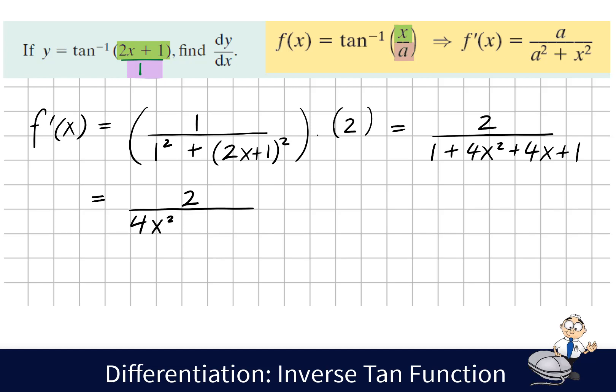When we write this out, we notice along the bottom that actually 2 divides into each part. We have 4x squared plus 4x plus 2, so 2 is a common factor here. We take out the common factor and write it like this.